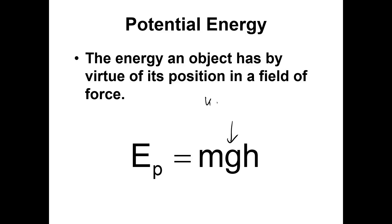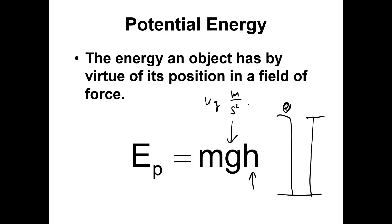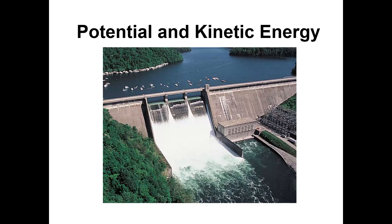For potential energy, G is gravity, M is mass, and H is height. Gravity is 9.8 meters per second squared, and H is the height in meters. When you work out the units — kilograms times meters per second squared times meters — you get kilograms times meters squared per second squared, which is a joule. So potential energy is also expressed in joules.